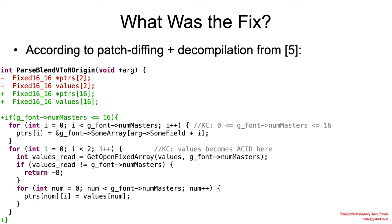For Windows 8.1, the patch is the following. First, the pointers array is no longer size two. It is now size 16, and numMasters is validated to make sure that it's never above 16.